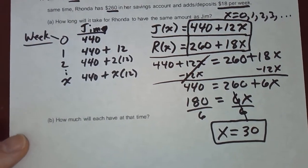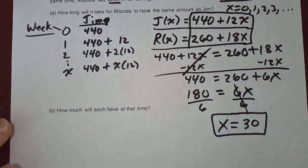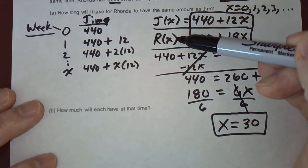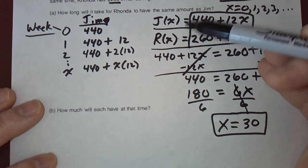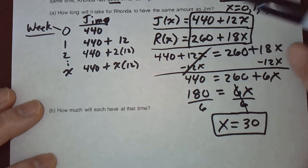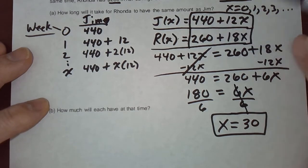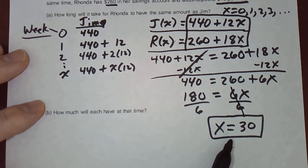Okay. And how much will each one have at that time? Well, this is very simple. At week 30, how much would Jim have? At week 30, how much would Rhonda have? We'll compute them. And we really should compute both of them. To make sure we didn't make a mistake. The number is going to be the same. Because we just solved. X is the number. Is the week number. Where they will have the same amount in their savings accounts. Let's just verify that.